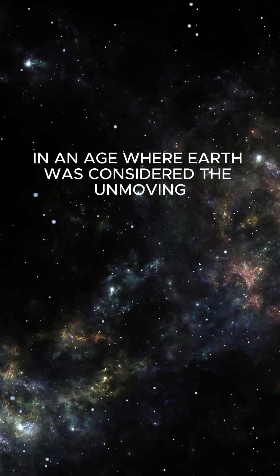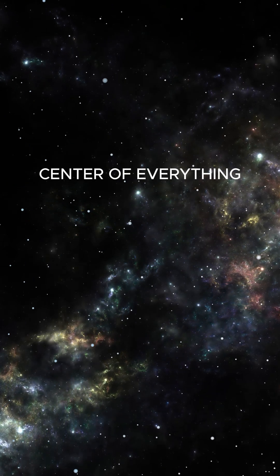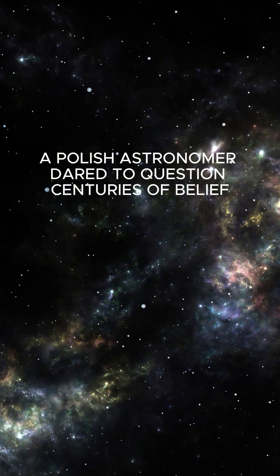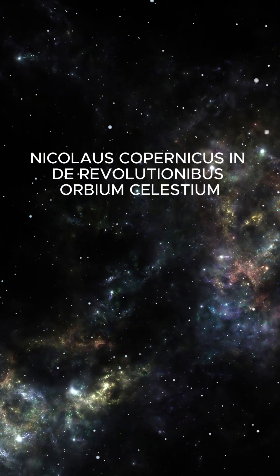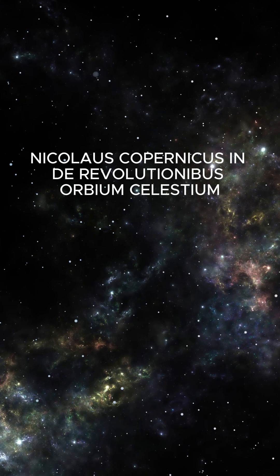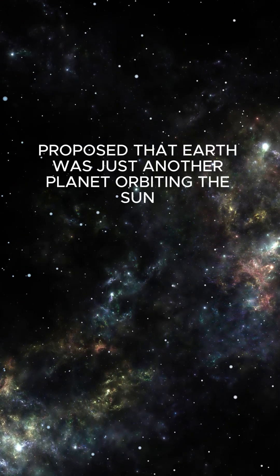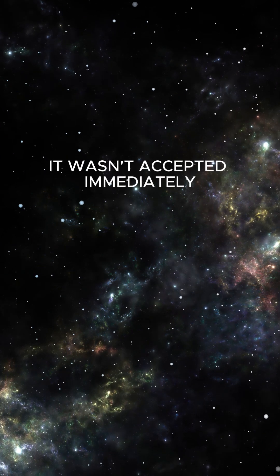In an age where Earth was considered the unmoving center of everything, a Polish astronomer dared to question centuries of belief. Nicholas Copernicus, in De Revolutionibus Orbium Coelestium, proposed that Earth was just another planet orbiting the sun. It wasn't accepted immediately, but it sparked the scientific revolution.